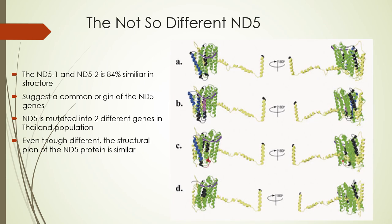Even though the ND5 in the bred type differs as ND5-1 and ND5-2, the two are actually quite similar with 80% structural similarity. This suggests that ND5 had a common ancestor gene that mutated into two different genes in Hoplobatrachus rugulosus bred type, while the protein structure remains quite similar with only one alpha helix difference.